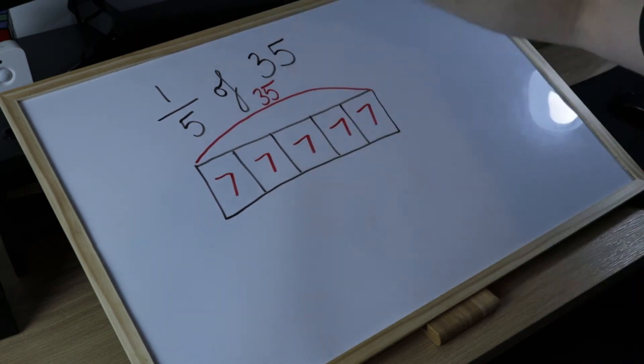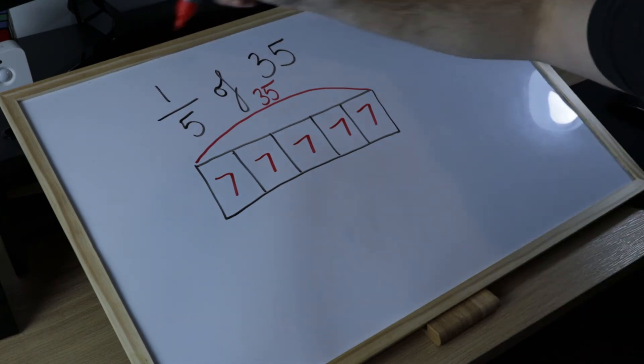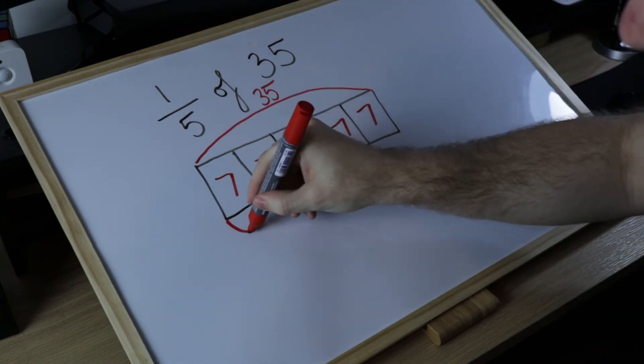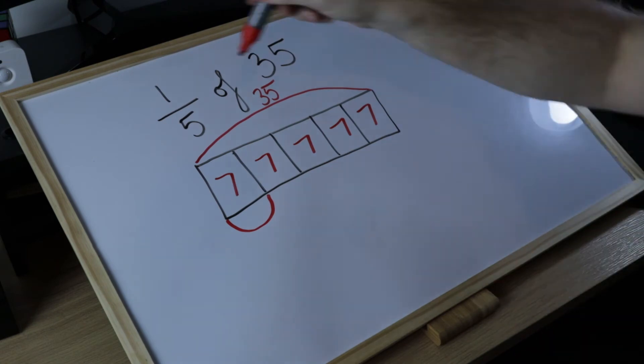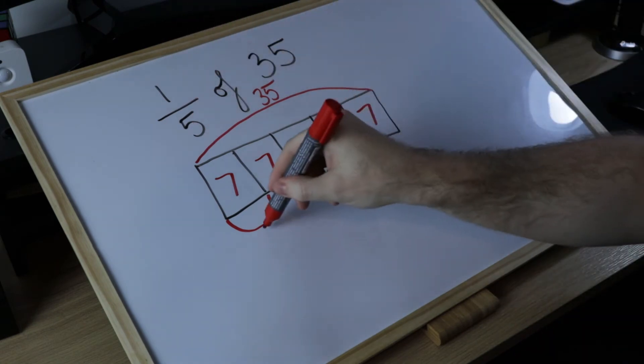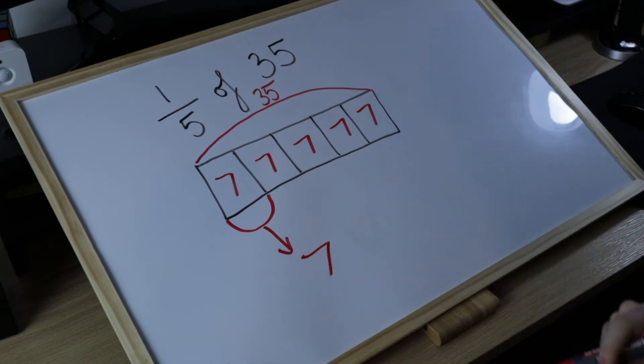How many fifths do I need? I need one-fifth. So I'm going to label one of my fifths underneath. Therefore, one-fifth of 35 is simply equal to seven.